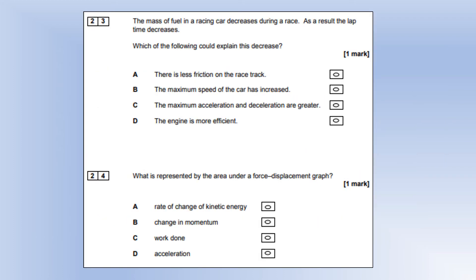The mass of fuel in a racing car decreases during the race and as a result, the lap time decreases. Which of the following could explain this? There's less friction on the racetrack. No, for a race car, friction is a good thing. You need friction to accelerate, brake, and turn corners. Maximum speed would be unaffected because maximum speed is limited by air resistance, which depends on surface area. That hasn't changed. Maximum acceleration and deceleration are greater. That would be true. If you have a smaller mass, your acceleration will be bigger if you have the same force. The engine is more efficient, I don't see any reason why it would be.